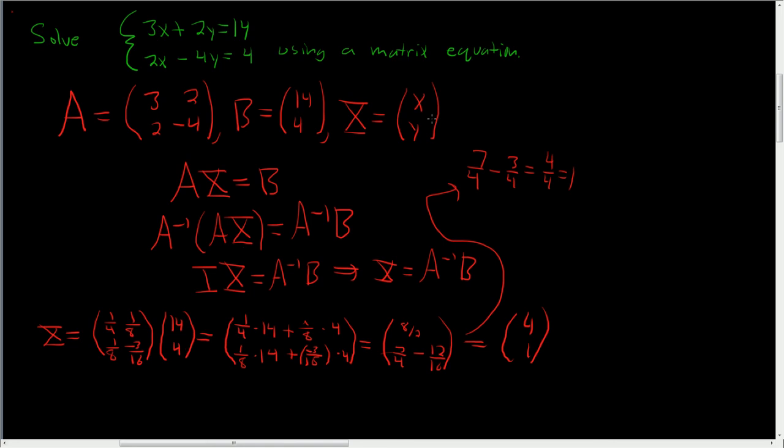Since capital X is x and y, we see that x is 4 and y is 1. So the final answer to our matrix equation is x equals 4 and y equals 1.